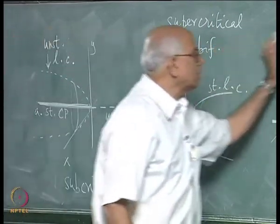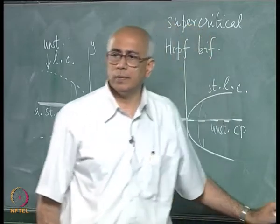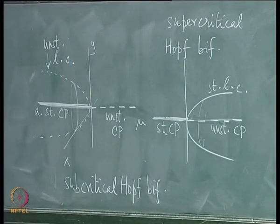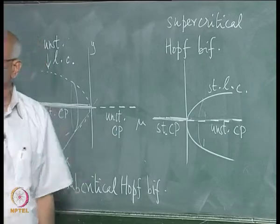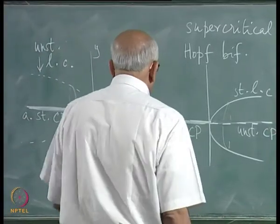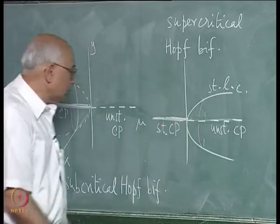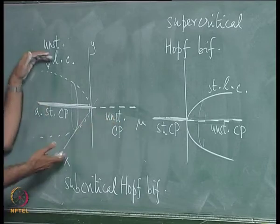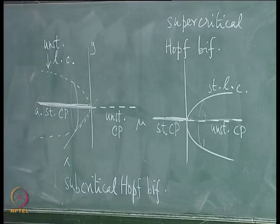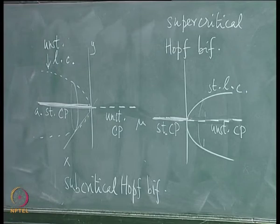In either case it is a bifurcation by which a critical point bifurcates into a critical point and a limit cycle, with the stabilities as described. The parabola's orientation is an artifact of how coefficients are chosen. The essential point is that a stable critical point bifurcates to a stable limit cycle in a supercritical bifurcation, while an unstable critical point gains stability but gives rise to an unstable limit cycle in a subcritical bifurcation. Both processes occur very often in nature, but only in dissipative systems.